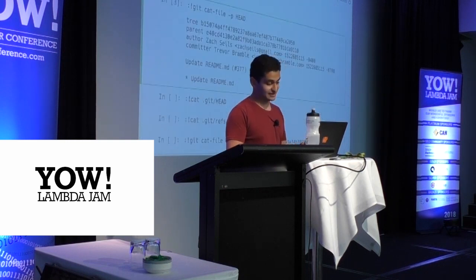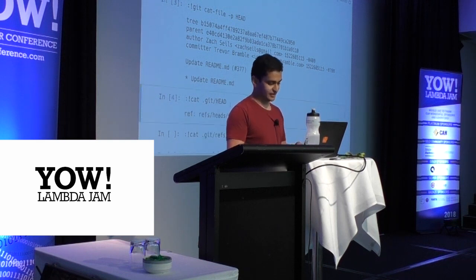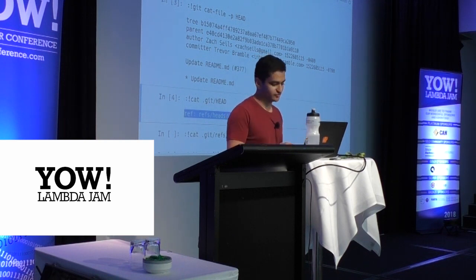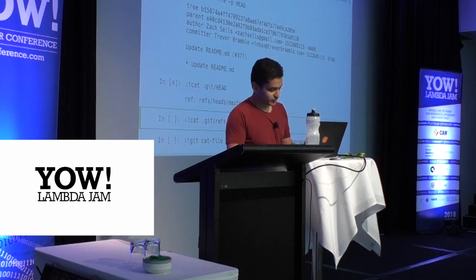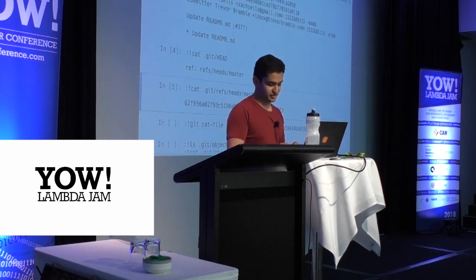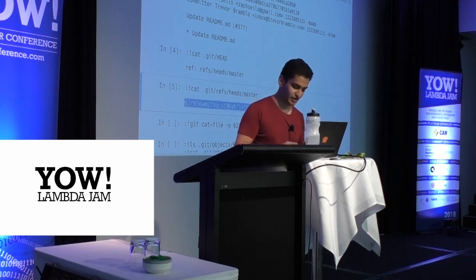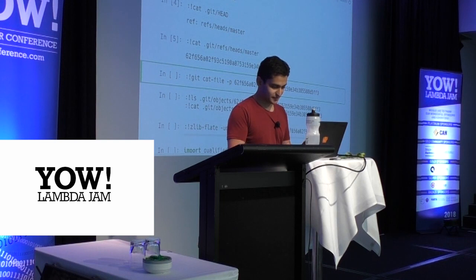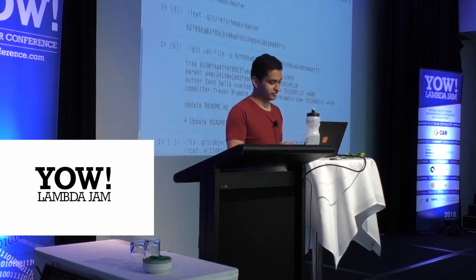What is HEAD? HEAD is a file that lives at .git/head. It points to another file — it's like a symlink, and it would be a symlink except Windows doesn't support them all that well, and git has to be cross-platform, which is why it doesn't do that. When we look at it, we get a 40-character SHA-1 hash. I can look at this file again by doing git cat-file -p, and I get the same output.